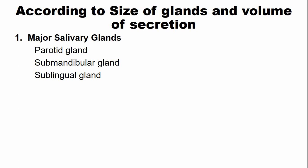The parotid, submandibular, and sublingual glands have a well-developed ductal system. They are called major glands because of their size, and secondly because the majority — about 90% — of the saliva is produced by the major salivary glands.